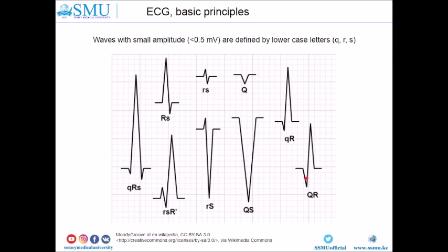The QS complex pattern means you don't have any positive deflection in the QRS complex — there is no R-wave at all, only Q and S. This morphology is called the large QS complex. Another pattern has only small r and large S complexes, which is typically found in the right precordial leads.